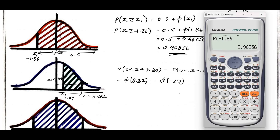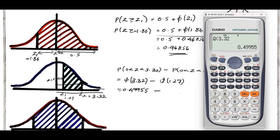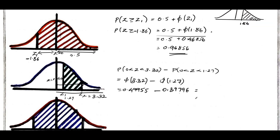Make use of the calculator. To find the area between 0 to z1, use distribution Q. Take Q of 3.32 — you get 0.49955. Minus Q of 1.27 — I got 0.39796. Simplifying this, we get the answer as 0.10159.